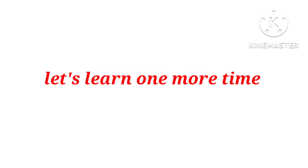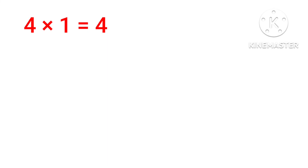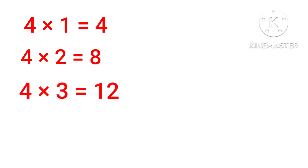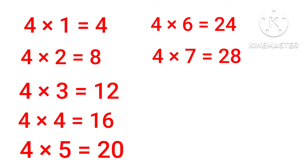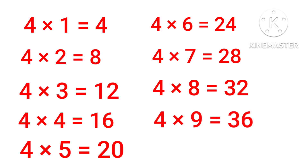Let's learn one more time. 4 1's are 4, 4 2's are 8, 4 3's are 12, 4 4's are 16, 4 5's are 20, 4 6's are 24, 4 7's are 28, 4 8's are 32, 4 9's are 36, 4 10's are 40.